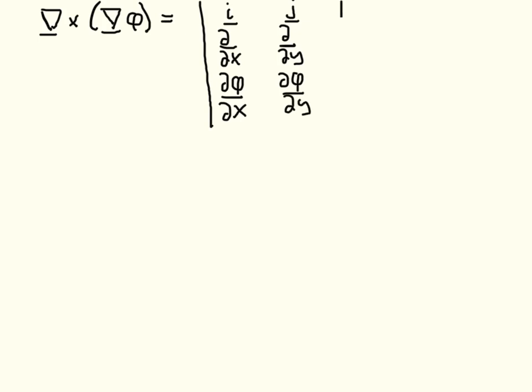and then k, d by dz, and then the derivative of our scalar field phi with respect to z. This here is what we need to calculate. The bottom row is the components of the gradient of phi, the i component, the j component, the k component, and the other rows tell you what the curl is of this particular vector.